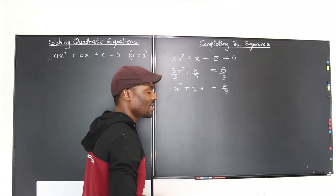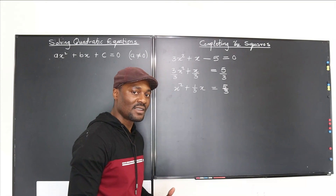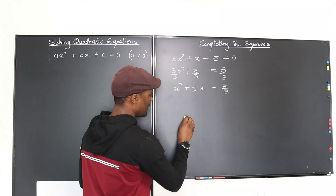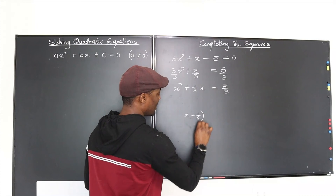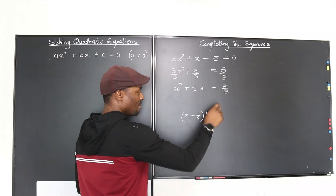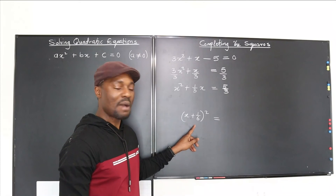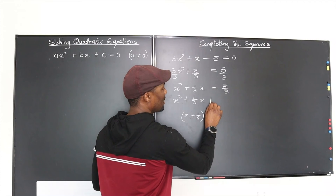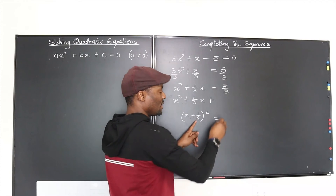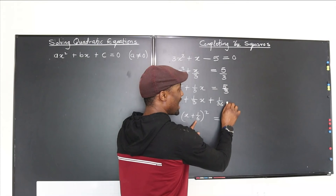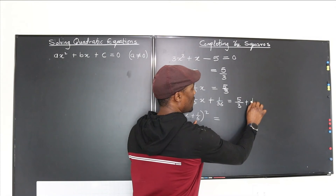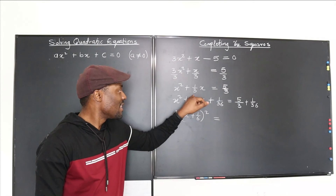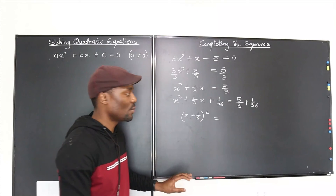Take half of 1 third, which is 1 sixth. Square it to get 1 over 36. Add 1 over 36 to both sides, giving x squared plus 1 over 3x plus 1 over 36 equals 5 over 3 plus 1 over 36. The left side becomes x plus 1 over 6, all squared. On the right, 5 over 3 times 12 over 12 gives 60 over 36, plus 1 over 36 equals 61 over 36.